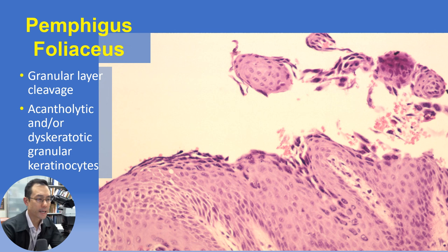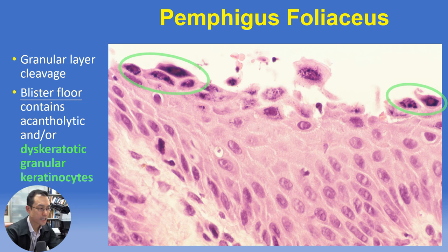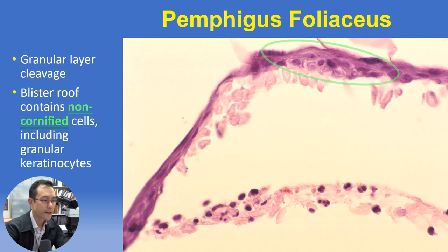At higher magnification, the superficial discohesive or acantholytic cells are flattened in profile and contain prominent basophilic cytoplasm surrounding the nucleus — both profile and basophilia marking these as granular layer keratinocytes. The phrase dyskeratotic granular keratinocytes nicely summarizes the appearances of these cells in pemphigus foliaceus. Looking at the blister roof, there are at least some nucleated keratinocytes including granular layer keratinocytes comprising it, which is different from the more non-specific artifactual separation that can occur between stratum corneum and stratum granulosum.